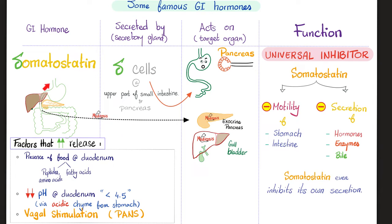Let's talk about somatostatin of the pancreas. I'm secreted by the delta cells of the islets of Langerhans in the pancreas. I'm also released by the upper part of the small intestine and by the hypothalamus. As for my function — I inhibit everything. I inhibit motility of the stomach and intestine. I inhibit the secretions of hormones and enzymes. I inhibit the secretion of bile. I even inhibit my own secretion.